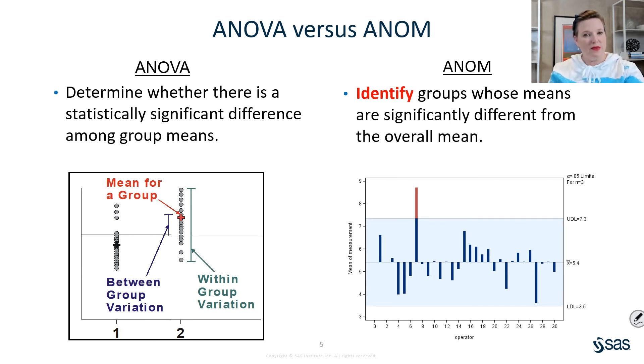With analysis of means, it's a graphical technique whose purpose is to identify groups whose means are significantly different from the overall mean. And so it's very easy to tell by which needle is in the red, which one is significantly different.